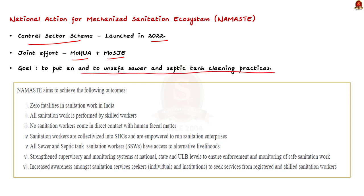Now let us understand the key objectives of the scheme. Firstly, to achieve zero fatalities in sanitation work — the scheme aims to eliminate any death that occurs during sanitation work in India. Then, to train the workers so that all sanitation work will be performed by skilled workers, meaning those involved in sanitation activities will receive proper training to carry out their work efficiently and safely. Thirdly, to ensure that there is no direct contact with human fecal matter — the scheme focuses on ensuring that sanitation workers do not come into direct contact with human waste, which is essential to protect their health and well-being.